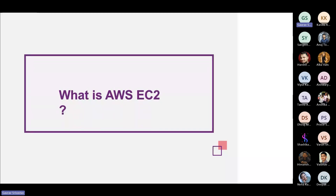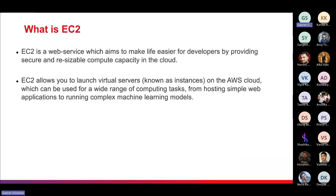EC2 is just like your basic desktop or laptop — you can access it on the internet. Using EC2 you can create servers and different kinds of infrastructure. EC2 is a web service which aims to make life easier for developers by providing secure and scalable compute capacity in the cloud. EC2 allows you to launch virtual servers, known as instances, on the AWS cloud, which can be used for a wide range of computing tasks — from hosting a simple web application to running complex machine learning models.